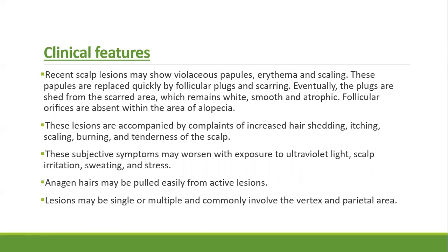Follicular orifices are absent and there is loss of skin markings within the area of scarring alopecia. Lesions are accompanied by increased hair shedding, itching, scaling, burning, and tenderness of the scalp. These subjective symptoms worsen with UV light exposure, scalp irritation, sweating, and stress. Anagen hairs are pulled easily from active lesions. Lesions may be single or multiple, but commonly involve the vertex and parietal areas.